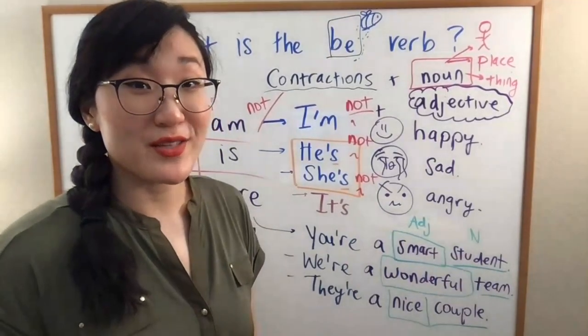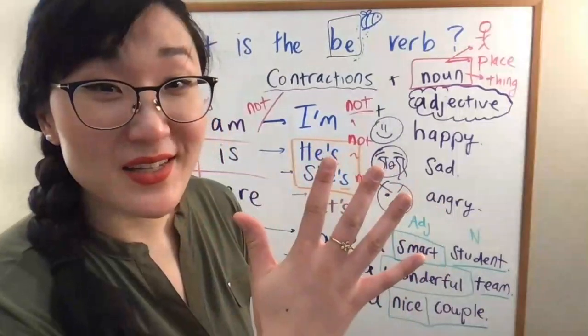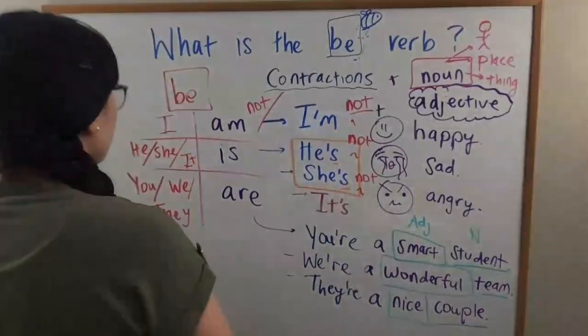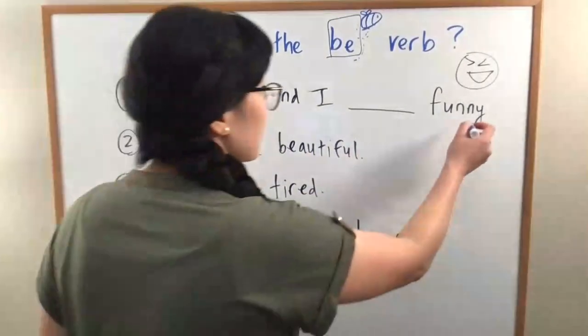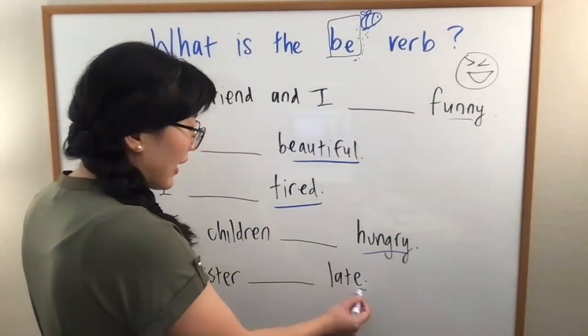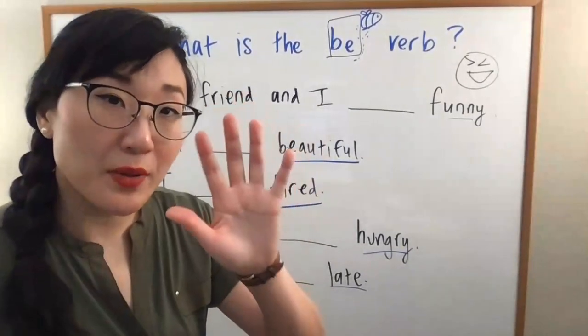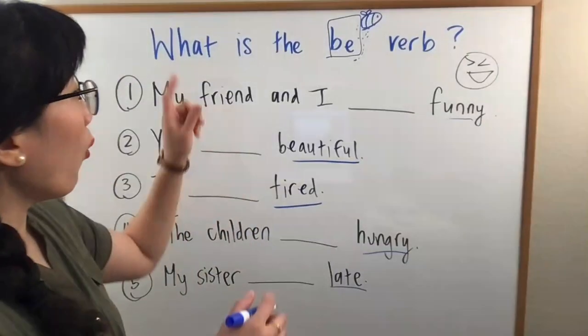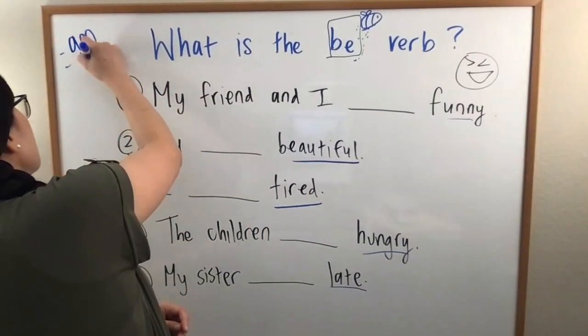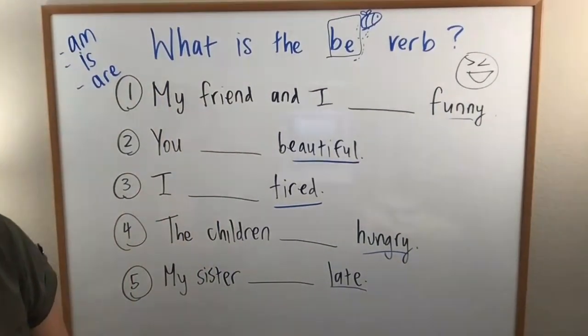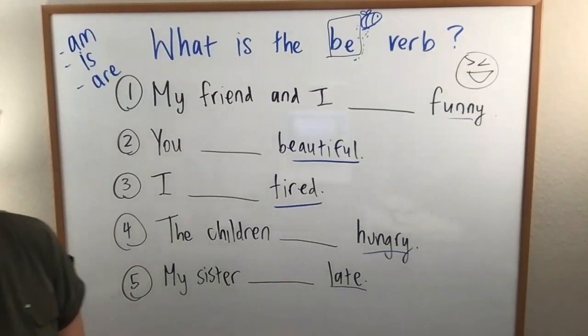Let's do five practice sentences just with what we learned today. In all of these five sentences, I am giving you adjectives. This is an adjective. I want you to stop the video and try to choose what BE verb you will use. Remember, you have three options. You have am, is, and are.